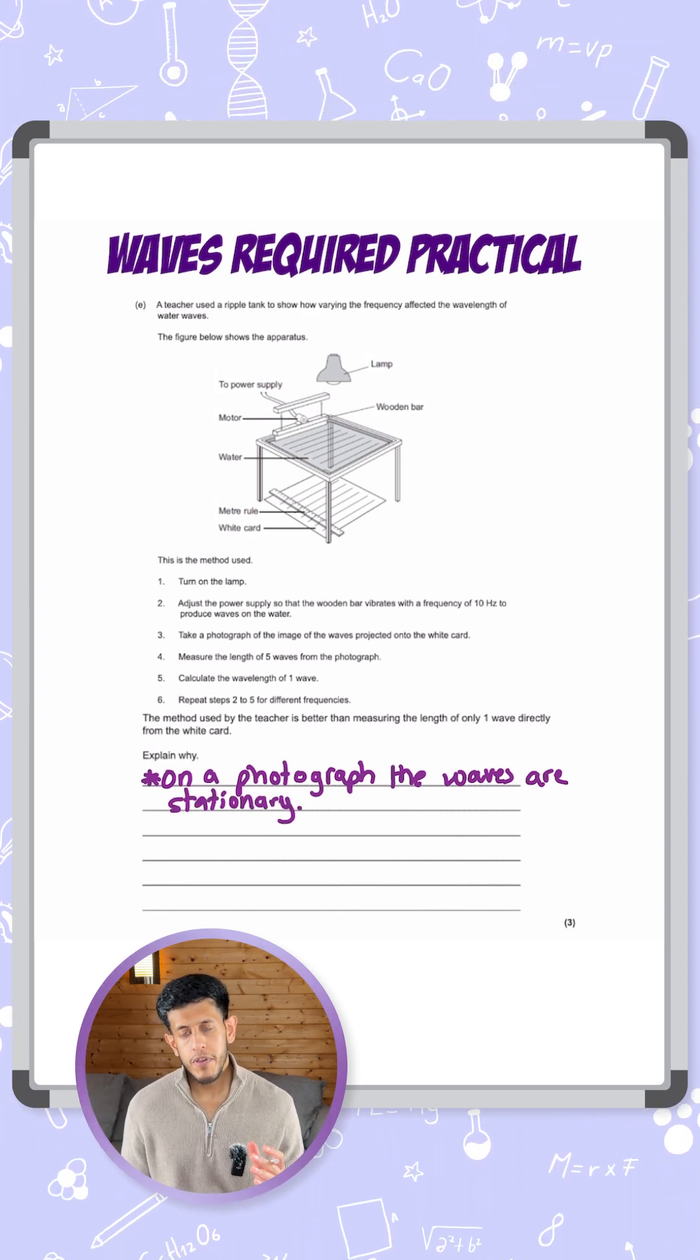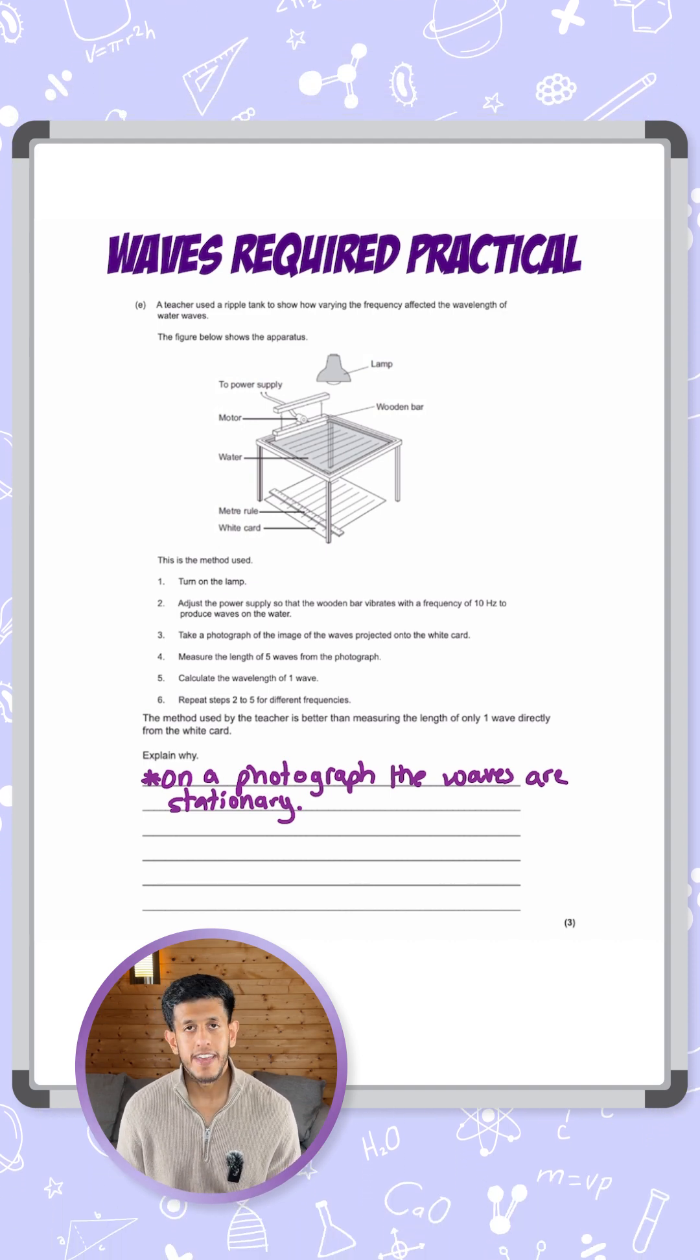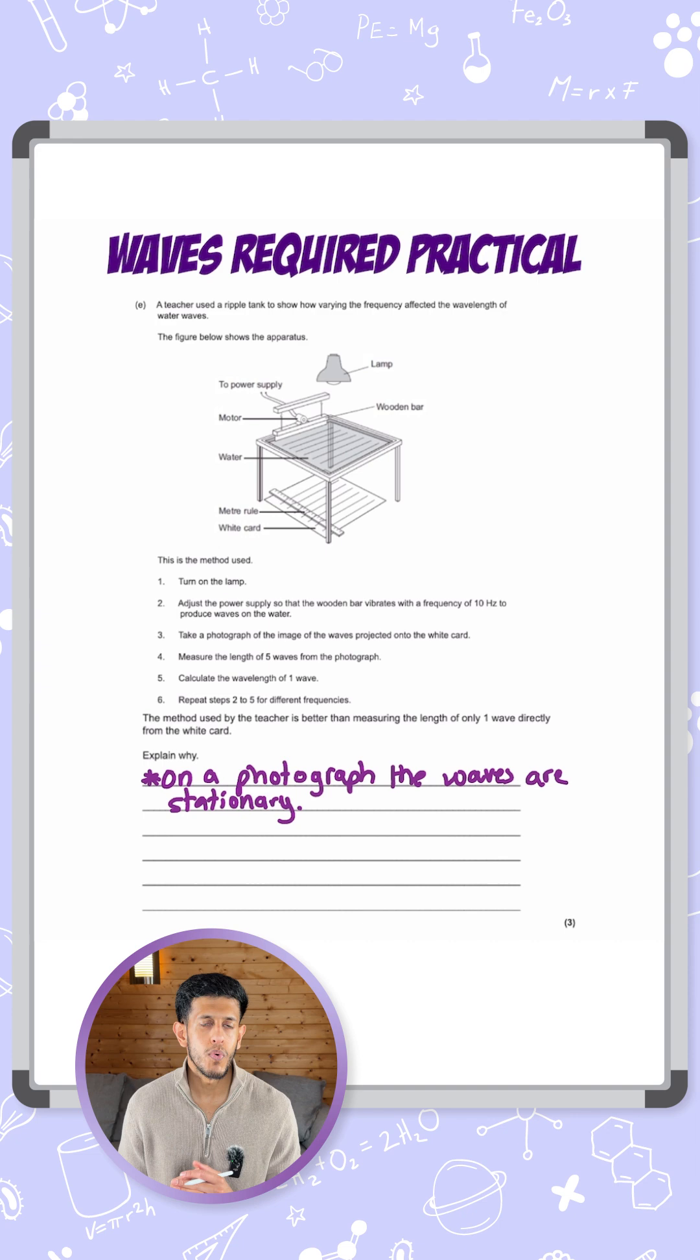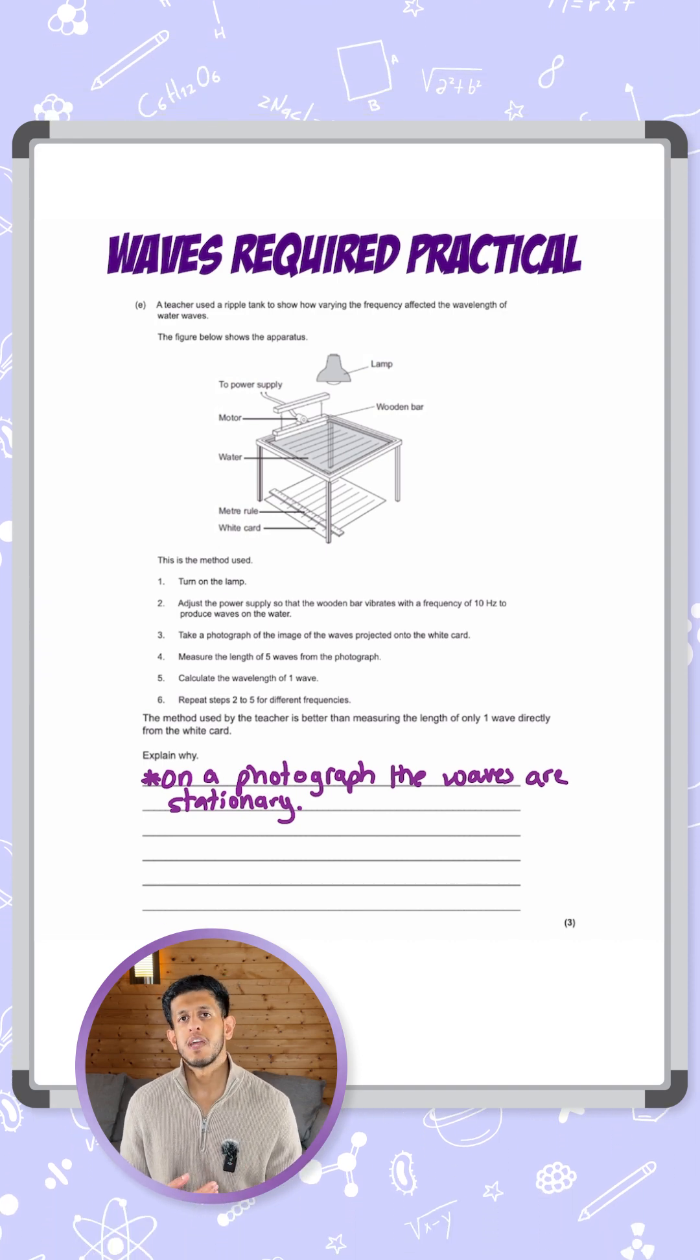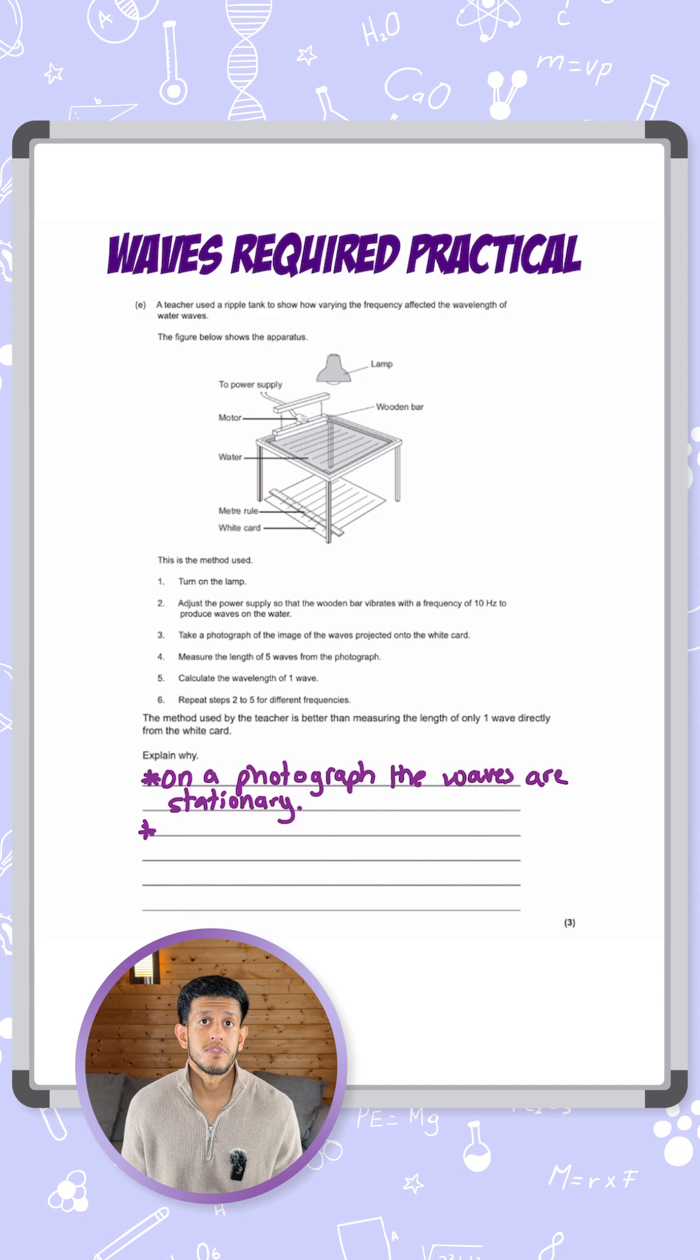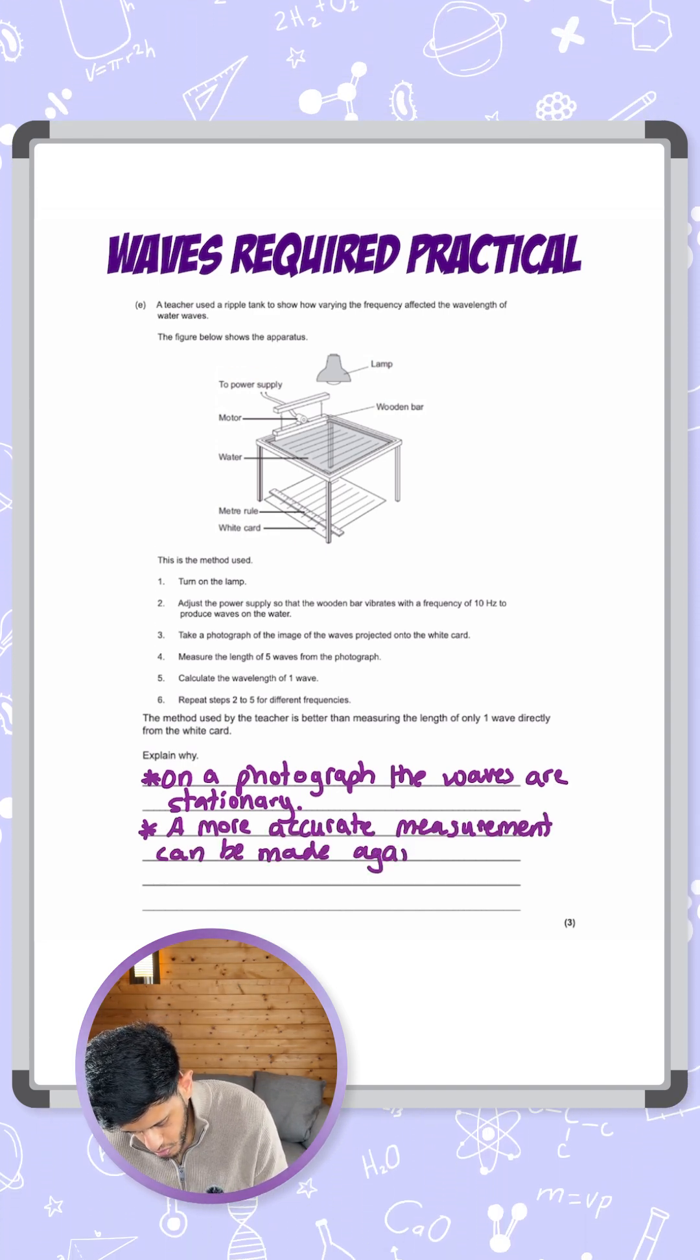The second thing is because they're measuring five waves and then basically dividing by the number of waves to give you a wavelength instead of just one wave, there's less room for error. Measuring more waves means you're able to calculate an average and be more accurate. So I'm going to say: a more accurate measurement can be made against a meter rule.